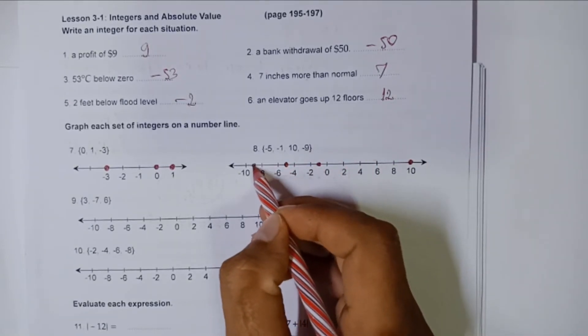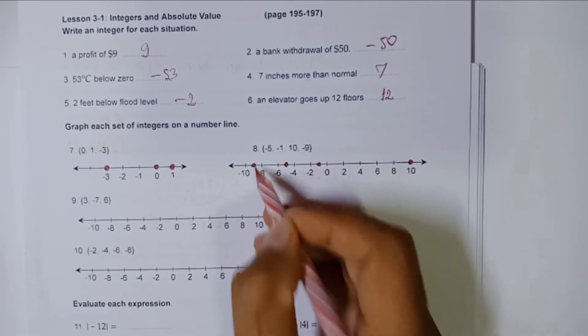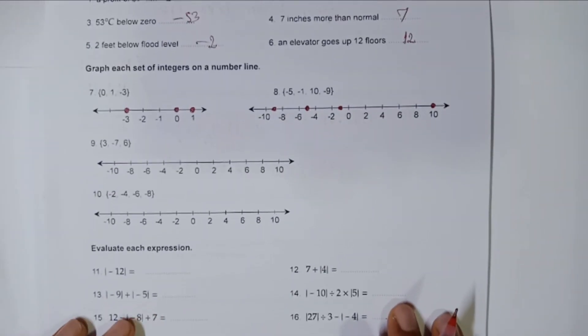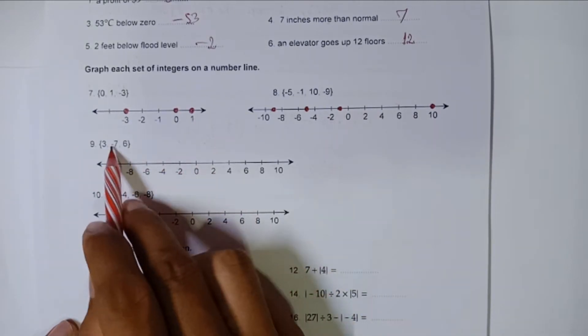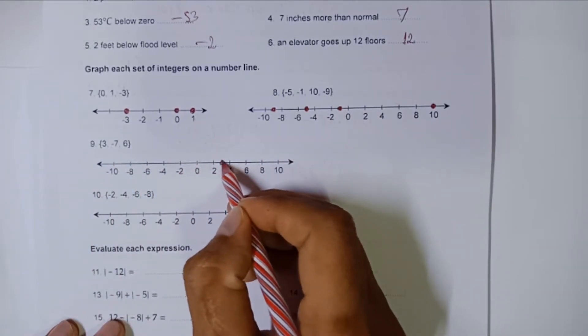Okay, number nine: three, three in between two and four, that's three.